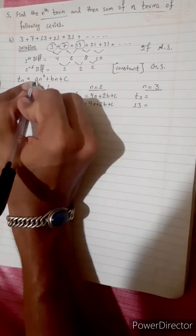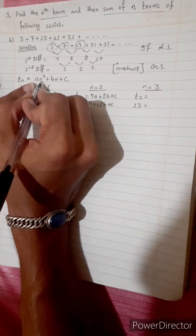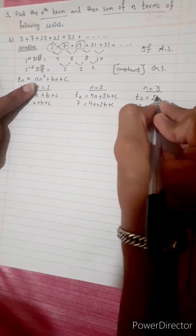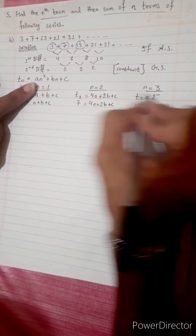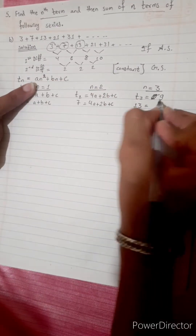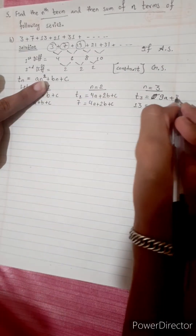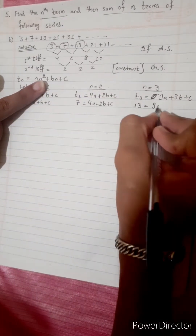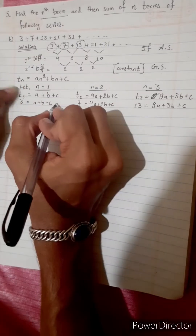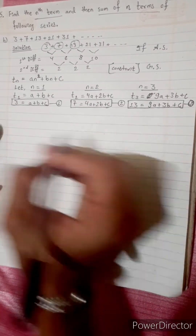For t3, which equals 13: 13 equals a times n squared, so 3 squared is 9, giving 9a, plus 3 times b equals 3b, plus c. So 13 equals 9a plus 3b plus c. Let's call these equation 1, 2, and 3.